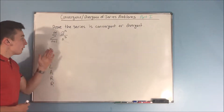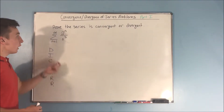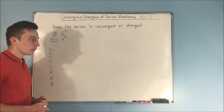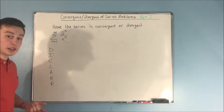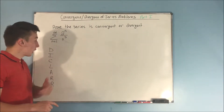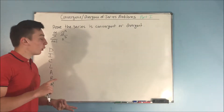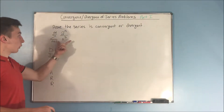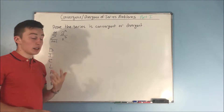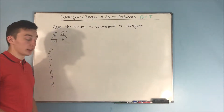We have our series: the sum from n equals 1 to infinity of 2 to the n over n cubed. The first thing to ask yourself is: is this something I don't need a test for — like a p-series or a geometric series? Looking at it, we know it's not a p-series and it's not a geometric series.